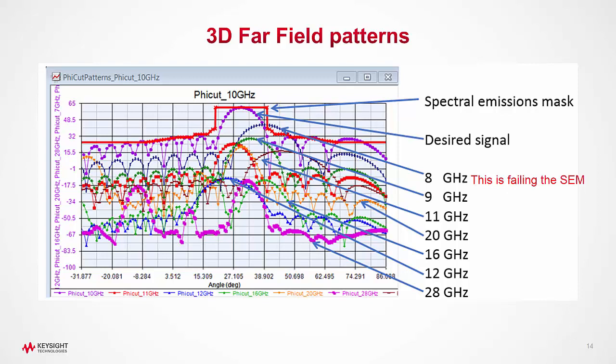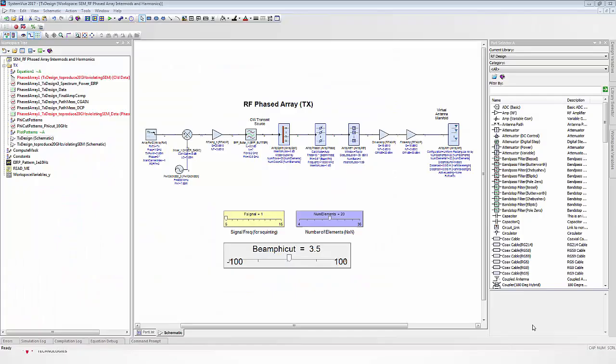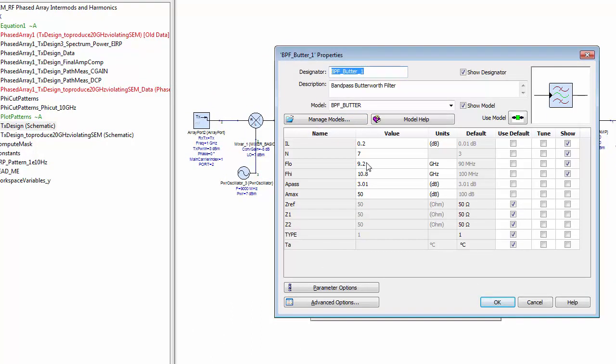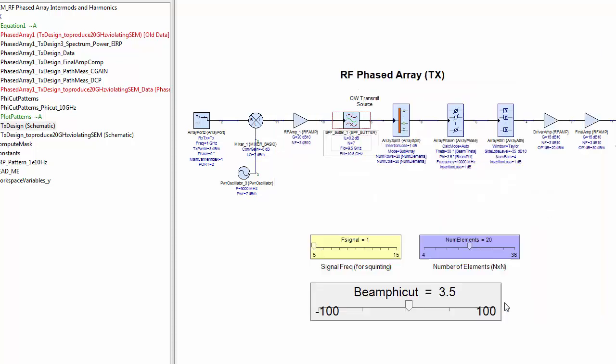There can be several solutions that a designer can come up with. But here we are taking one approach to suppress this product. The filter in the block diagram immediately after the mixer and amplifier is originally designed with a bandwidth going from 9.2 to 10.8 GHz. We reduced this bandpass filter characteristic to 9.5 to 10.5 GHz.